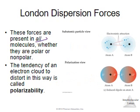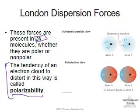London dispersion forces are present in all molecules — all of them. So if a question asks what intermolecular forces are present, London dispersion forces should always be one of your answers. Some molecules are more likely to form stronger London dispersion forces than others. We call the tendency for the electron cloud to distort in this way polarizability. The more likely electrons are to hang out on one side of an atom or molecule, the more polarizable that atom or molecule is.